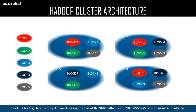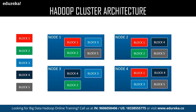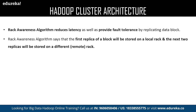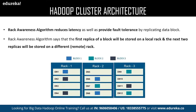Now let us move on to the rack awareness algorithm. The rack awareness algorithm is all about data storage. It states that the first replica of the actual data must be located in the local rack, and the rest of the replicas can be stored on a different remote rack.